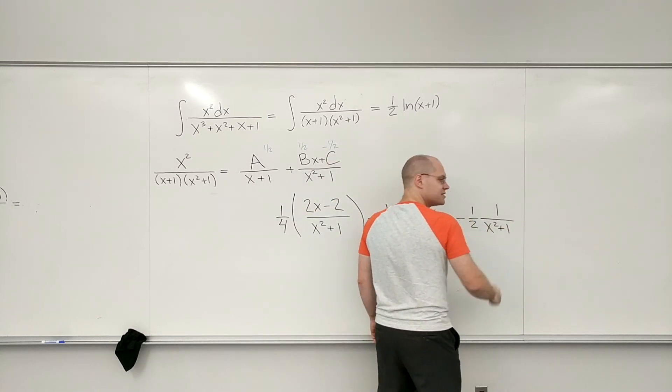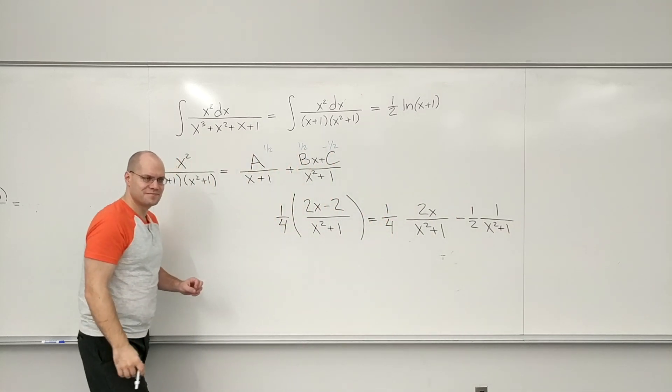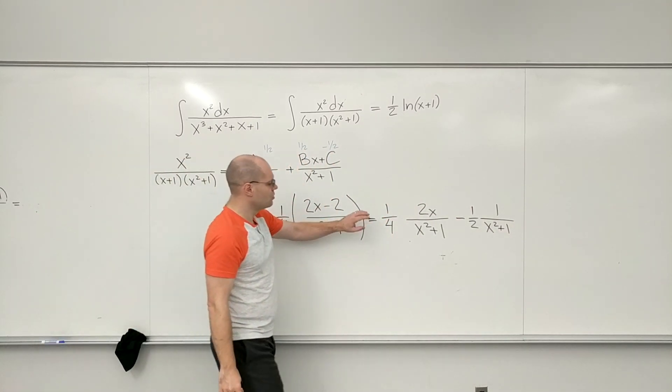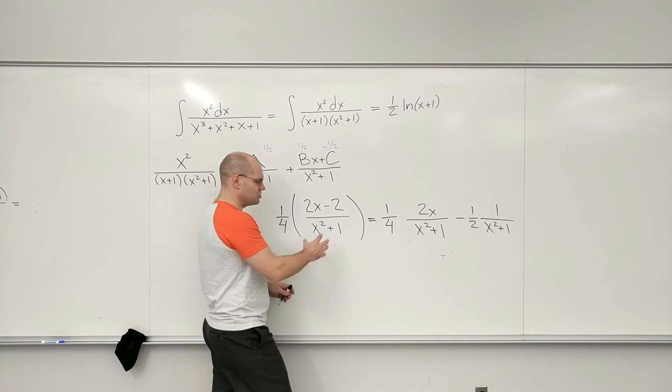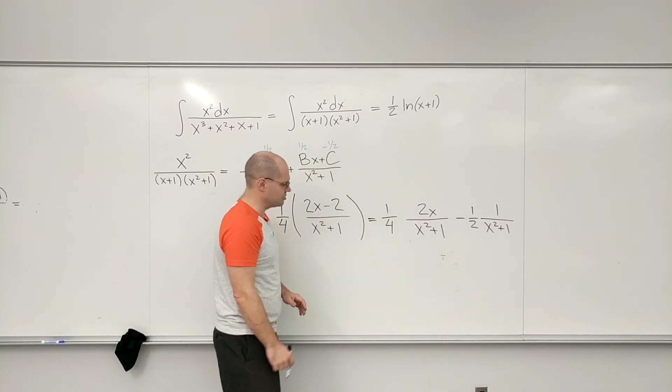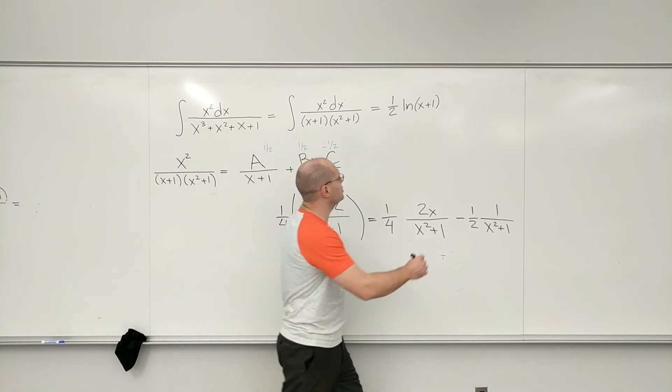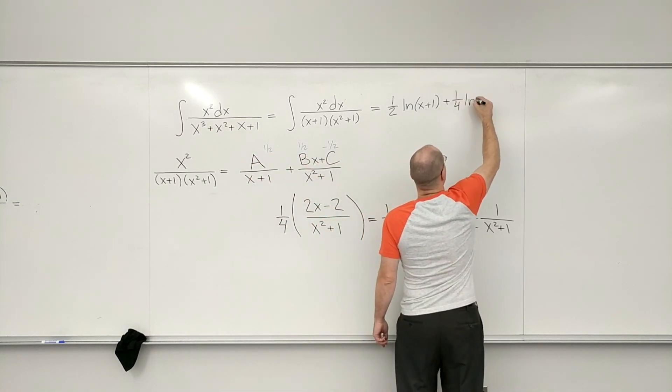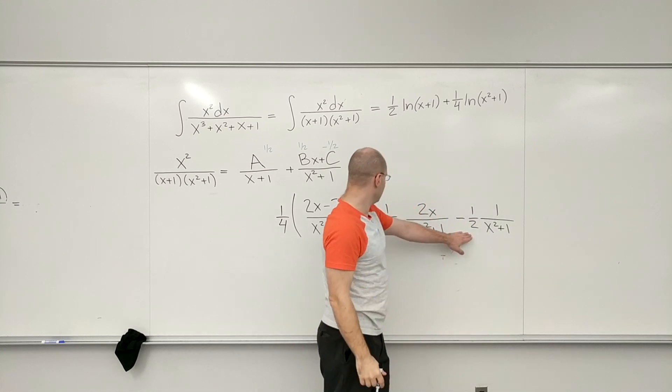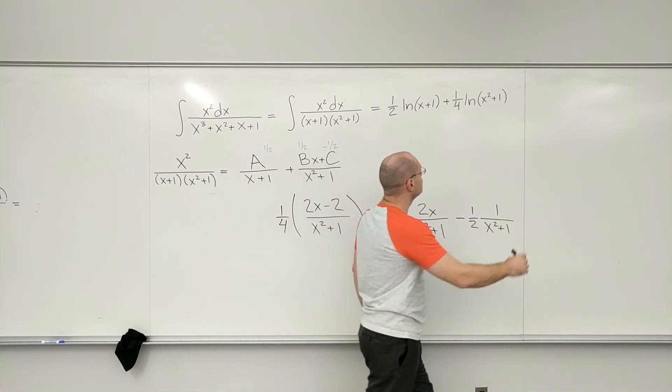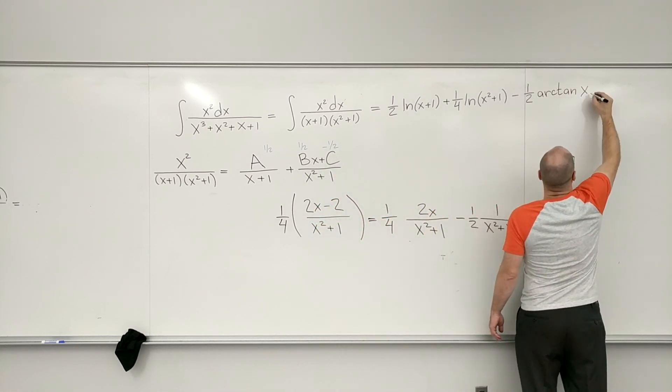So if all of this looks like wizardry, right, you just have to know what target I'm going for. I just need to pick out the terms that I know how to integrate. So this gives me one quarter log of x squared plus one and this is my favorite arctan.